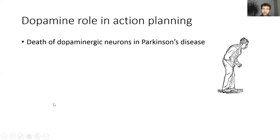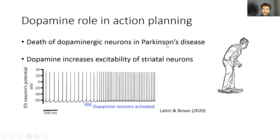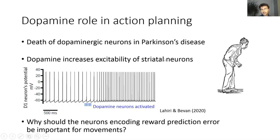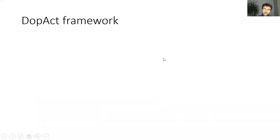The third challenge for reinforcement learning theory is to describe the role of dopamine in action planning. This role is evident from difficulties in initiation of voluntary movements seen in Parkinson's disease. This dopamine role in energizing movements is likely underlined by the fact that dopamine seems to increase the excitability of striatal neurons. So this dopamine role in movement poses the question: why should neurons encoding reward prediction error be important for movements?